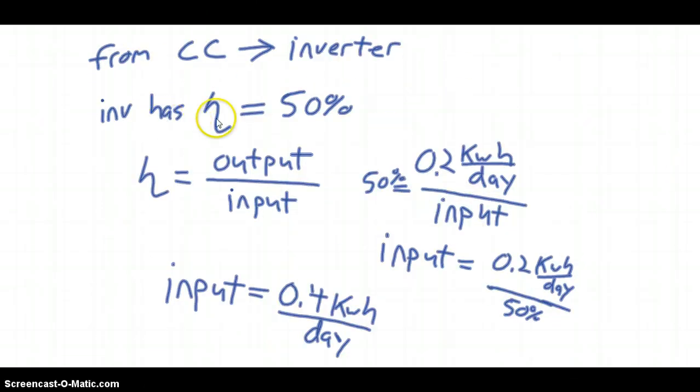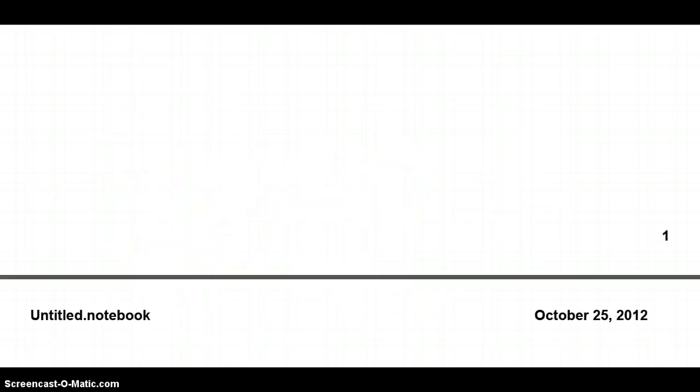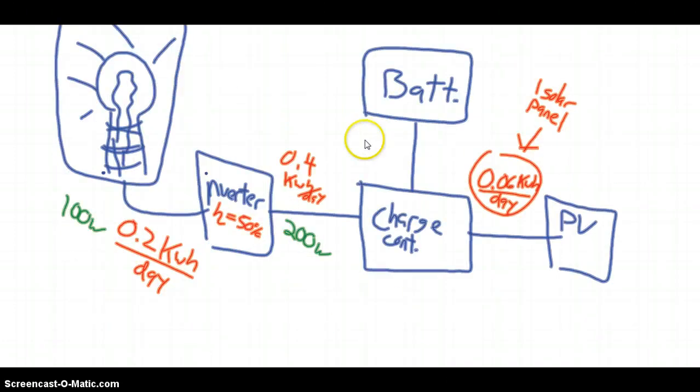Now, we know that the inverter has an efficiency of 50%, and we know the output of the inverter is what's going on in the light bulb, which is the 0.2 kilowatt hours a day we just calculated, and then 50% is the efficiency. So, the input equals 0.4 kilowatt hours a day, rearranging and using this equation. So again, we just figured out the 0.4 kilowatt hours per day, so we put that up here.